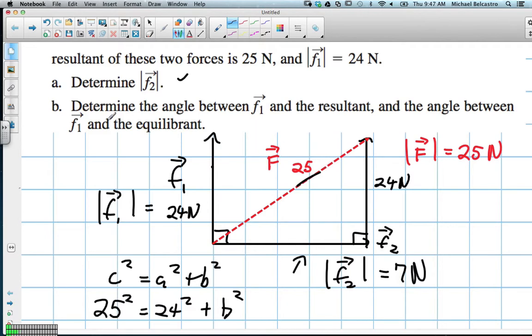So we solve this part. The second part says, determine the angle between F1 and the resultant, and the angle between F1 and the equilibrate. Our angle of F1, this is technically our original F1. So due to our triangle, we can find this interior angle here, and then subtract from 90 degrees.